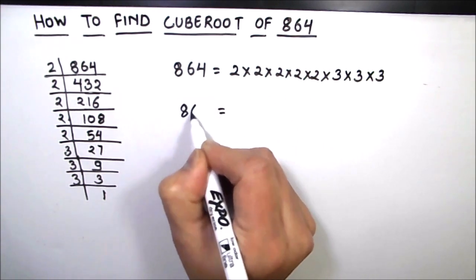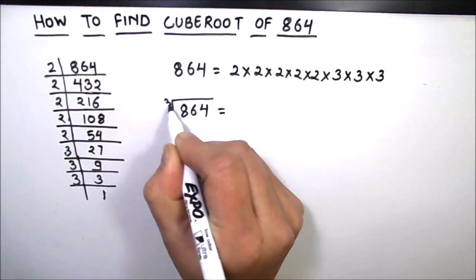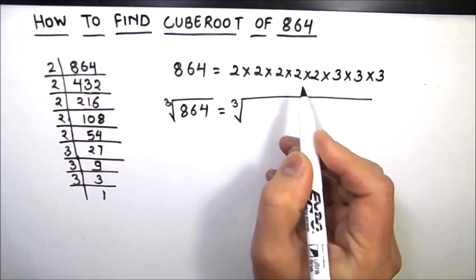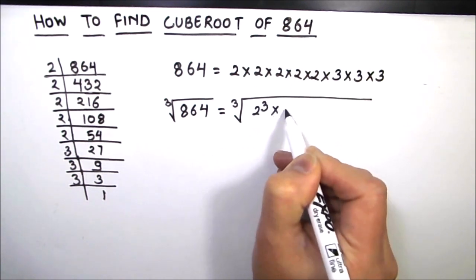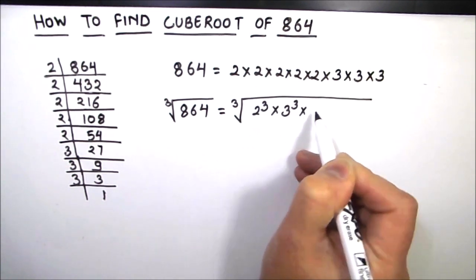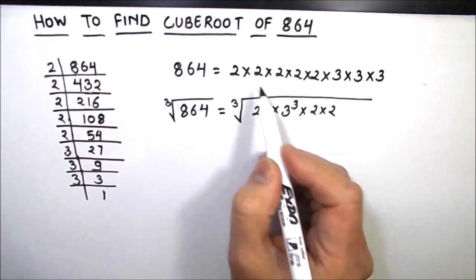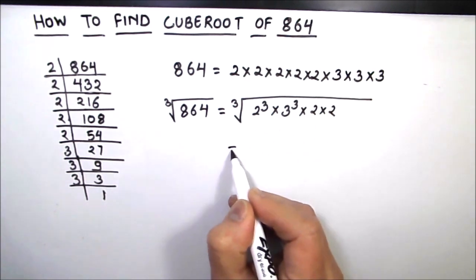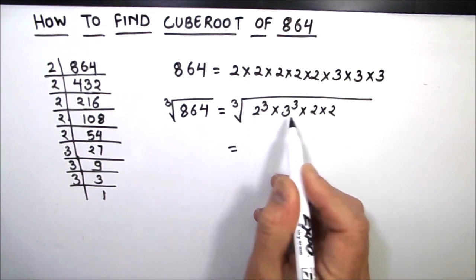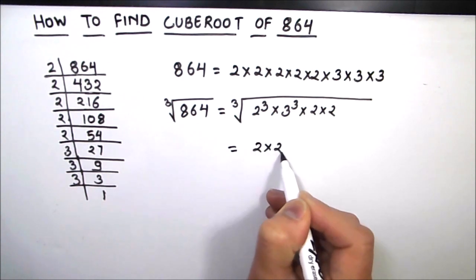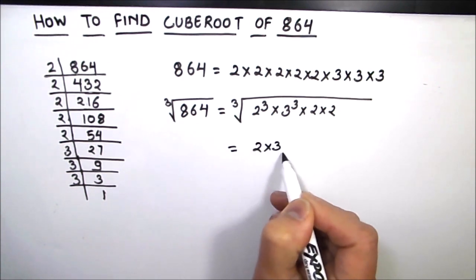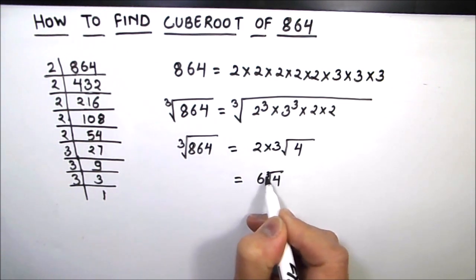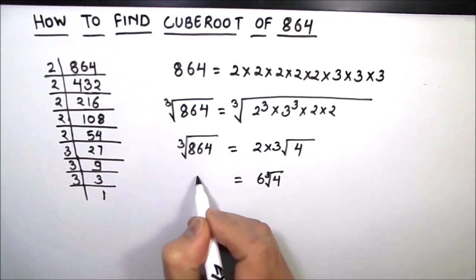As we are finding the cube root, we are going to take the cube root on both sides. The cube root of 864 equals the cube root of 2³ × 3³ × 2. We write these numbers in the form of cubes, so 2³ and 3³ come out of the cube root sign, giving us 2 times 3, which is 6, times the cube root of 4.